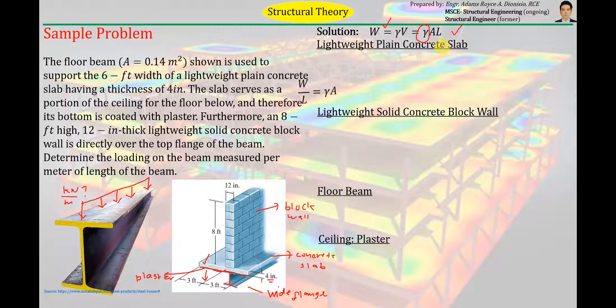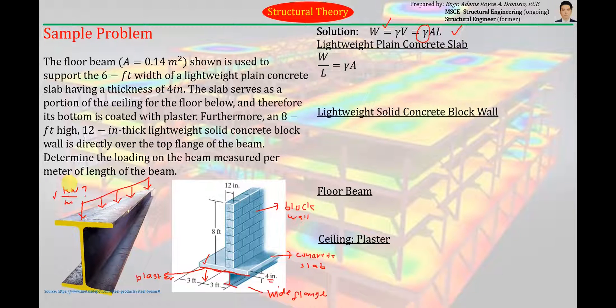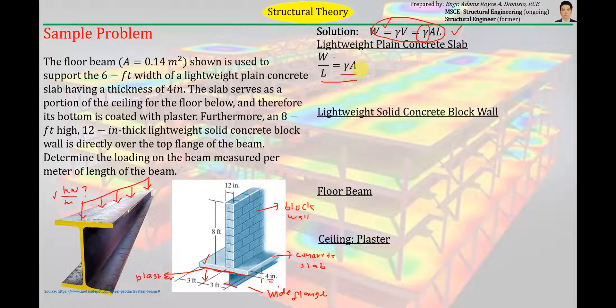And then, just for simplicity, since the problem asks for that load that is in terms of kilonewton per meter or force per length, might as well, i-express natin agad yung makukuha natin na sagot dito na naka force per length na lang. So yung length na to, ibaba natin sa left side of the equation, patitira ay eto. So yung pinaka formula natin will just be unit weight times the cross-sectional area para yung makukuha natin sagot na load naka force per length na agad. Ganyan na lang yung gamitin natin.